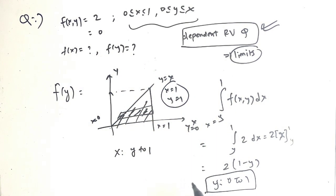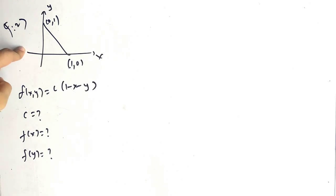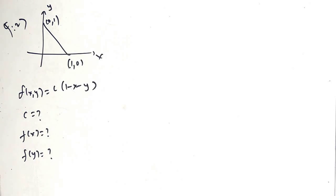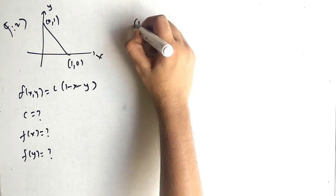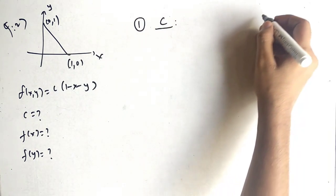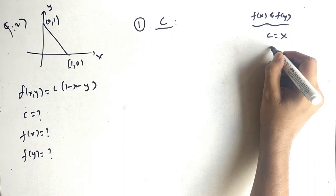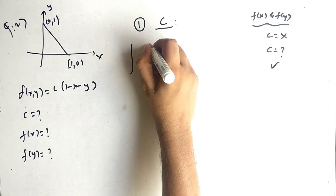Question 2: we are given a triangle with coordinates (1,0) and (0,1), and small f of x comma y equals c times (1 minus x minus y). We have to find c and then find the marginal PDFs. Since c is unknown here — unlike the previous question — we must find it first. To find c, we consider a strip over the region.